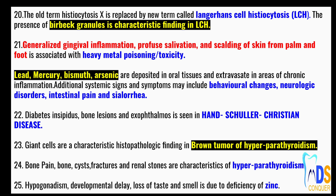Point number twenty-two: diabetes insipidus, bone lesions, and exophthalmos is seen in Hand-Schüller-Christian disease. Point number twenty-three: giant cells are the characteristic histopathologic finding in the case of brown tumor of hyperparathyroidism. Point number twenty-four: bone pain, bone cysts, fractures, and renal stones are characteristics of hyperparathyroidism.